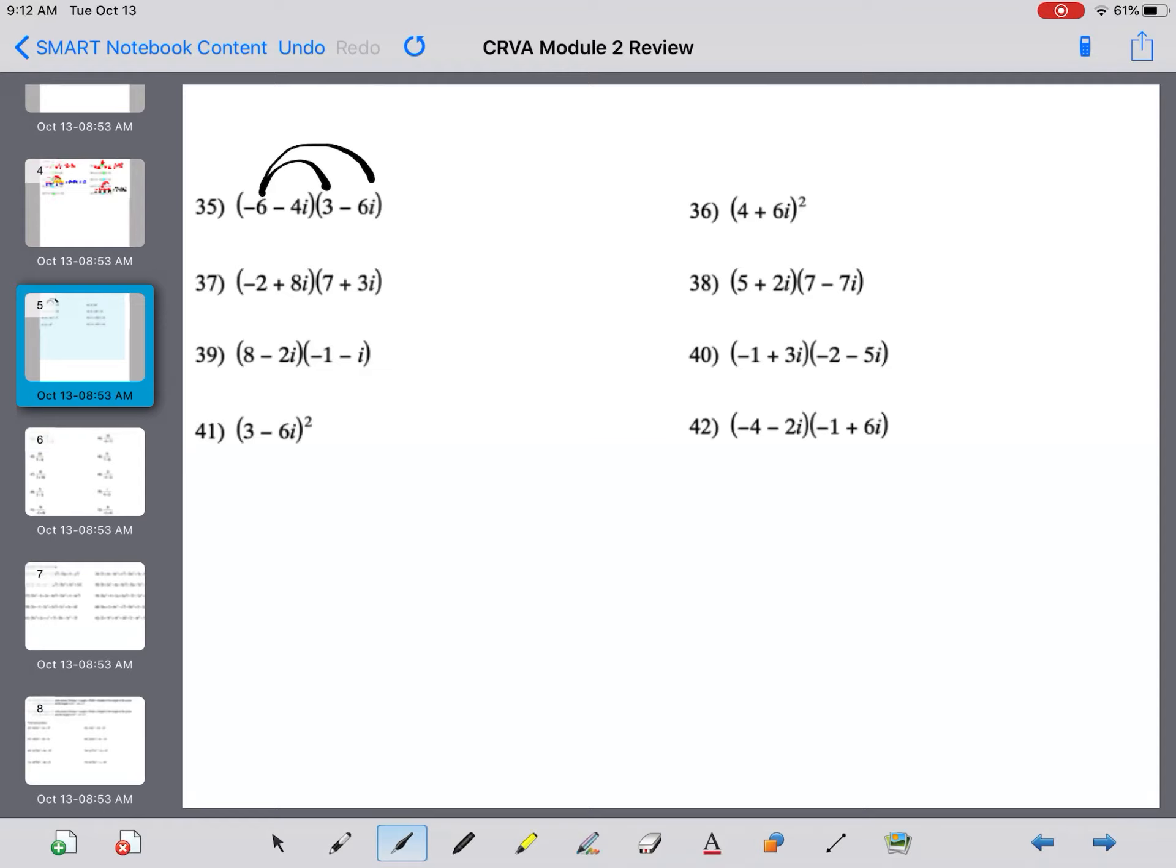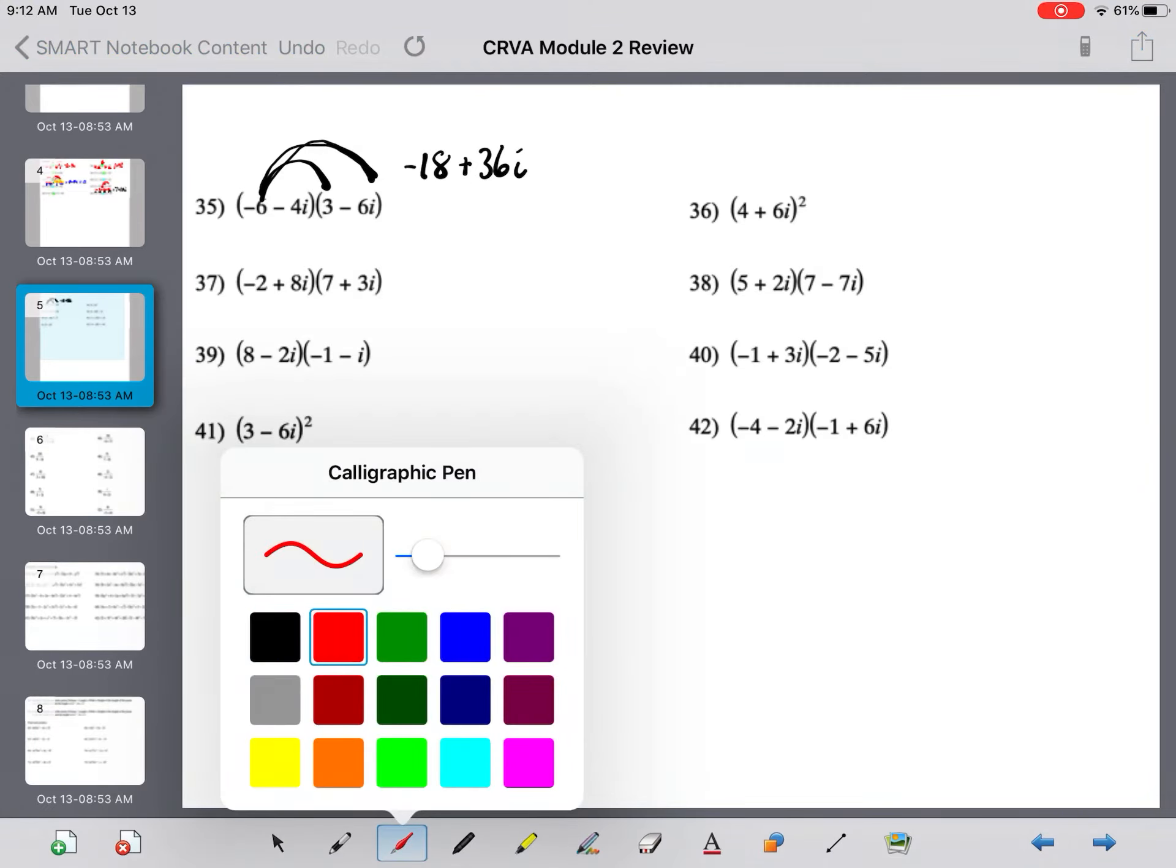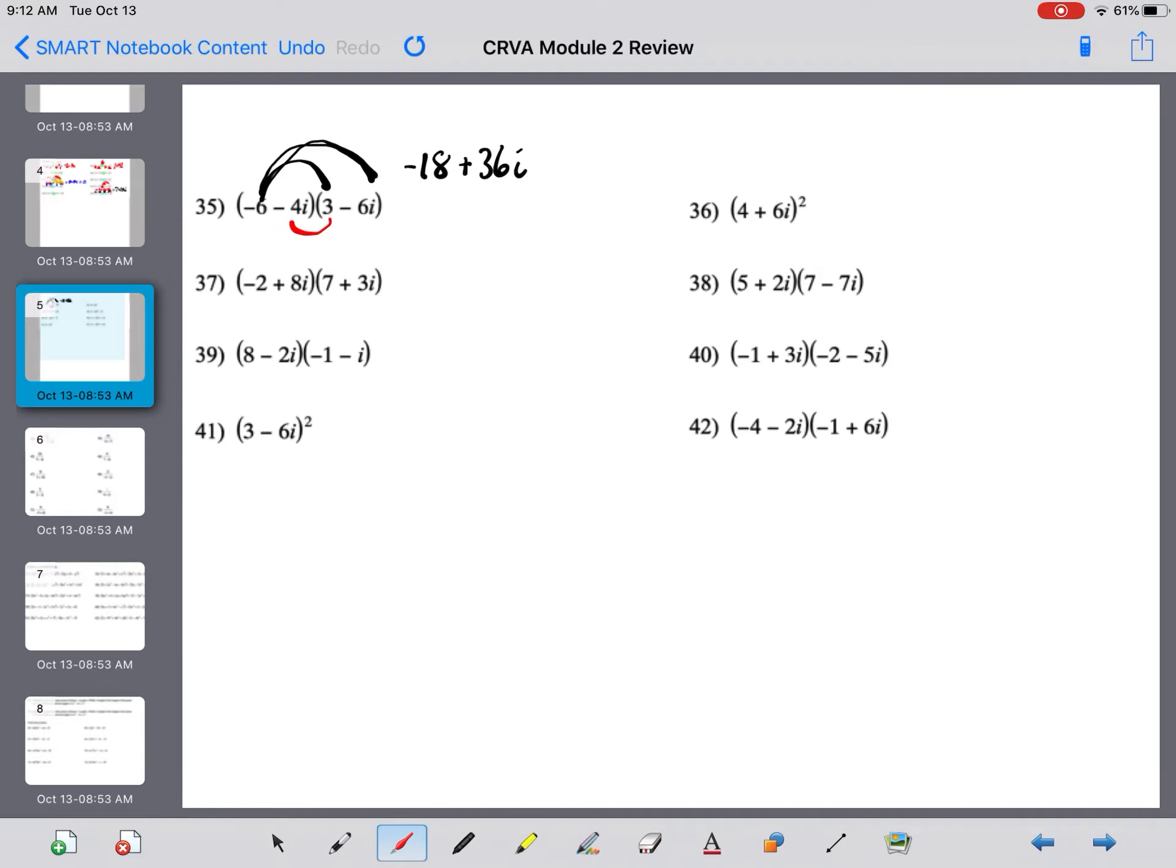I'm going to distribute this negative 6 to everything in the other parenthesis. So, we get negative 18. And, then negative 6 times negative 6i is positive 36i. Then, I'm going to distribute this negative. Make sure you realize this is a negative. Chop slash if you want to. Chop slash if you weren't sure if that was a negative or positive 6i in the second parenthesis. So, negative 4i times 3 is negative 12i. Maybe you want to write it that way. And, then negative 4i plus negative 6i is positive. Because, a negative times a negative is a positive 24. i times i is i squared.